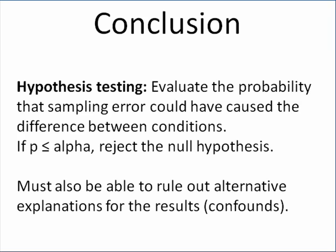Second, we must be able to rule out alternative explanations for results — that is, there shouldn't be any confounds. For example, if the treatment group started off as college students, we already know that college students are brighter than the average population — that would be a confound. If people were given workshops on how to improve IQ in addition to taking vitamin water, that would also be a confound. We only want one difference between our two groups.